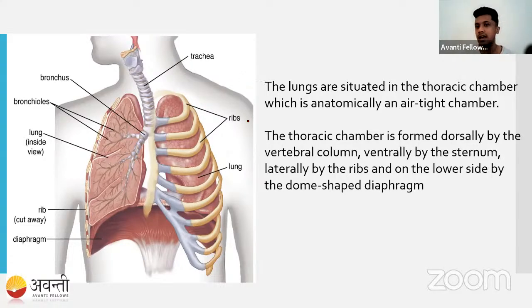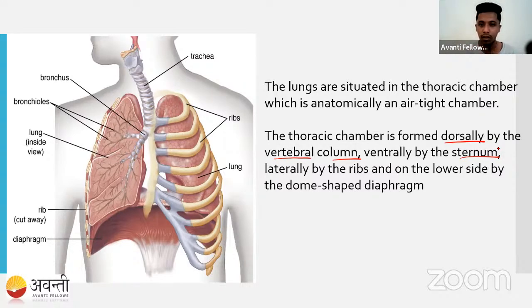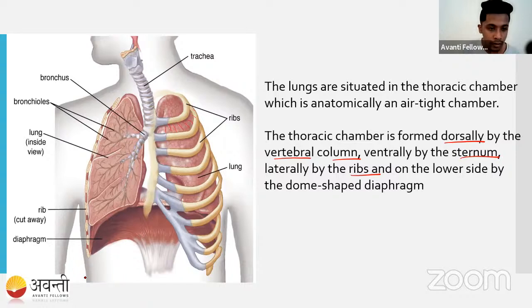What is the position of the lungs? Since the lungs are very sensitive, they are situated in the thoracic chamber — a very airtight chamber. The thoracic chamber is supported dorsally by the vertebral column and ventrally by the sternum, also called the breast bone. The entire thoracic cavity is like a cage — a thoracic cage — made up of ribs interconnected by intercostal muscles: external intercostal muscles and internal intercostal muscles. On the posterior side of this thoracic cavity, you have a dome-shaped structure called the diaphragm.